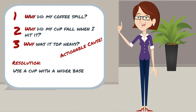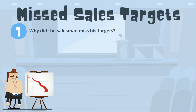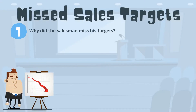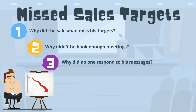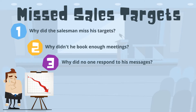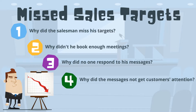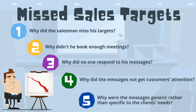Let's take a look at a sample why path for the problem of missed sales targets. Why did the salesman miss his targets? He set up too few meetings. Why didn't he book enough meetings? No one responded to his messages. Why did no one respond to his messages? They didn't get his customers' attention. Why did the messages not get his customers' attention? They were too generic.